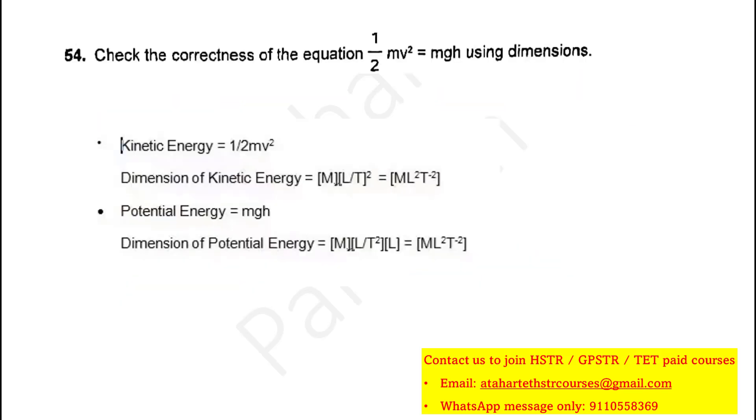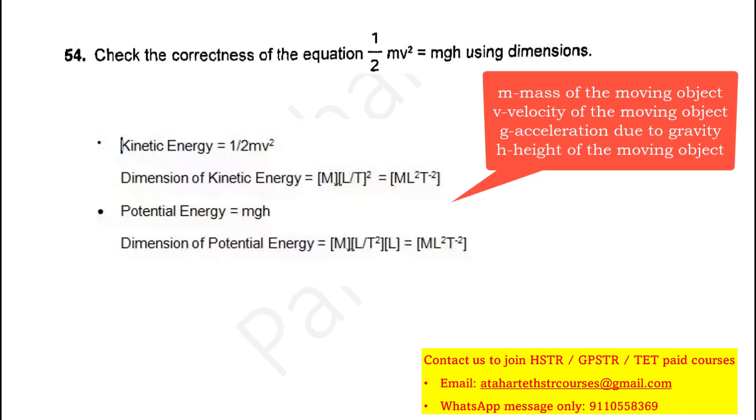For example, in your previous year question paper, they have asked to check the correctness of the equation half mv square is equal to mgh using dimensions. This is a two mark question. And half mv square means it is kinetic energy and mgh means it is potential energy. Half is a constant. So, just substitute the dimensions of the physical quantity. Here in kinetic energy, it is mass and velocity. Same way do it for potential energy. You will find that the dimensional formula of kinetic energy and potential energy both are same. Hence, you can prove that the kinetic energy is equal to potential energy.